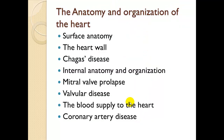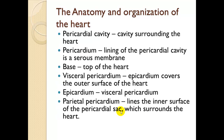The anatomy and organization of the heart will cover surface anatomy, heart walls, Chagas disease as a clinical note, internal anatomy and organization, mitral valve prolapse, valvular disease, blood supply to the heart, and coronary artery disease. We'll go through these terms and then look at pictures.